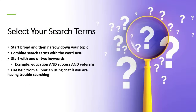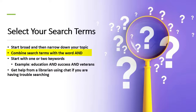Before we start searching, let's review some tips for choosing your search terms. Start broad and then narrow down your topic. Combine search terms with the word AND — capital A-N-D. Start with one or two keywords. An example is: education AND success AND veterans.